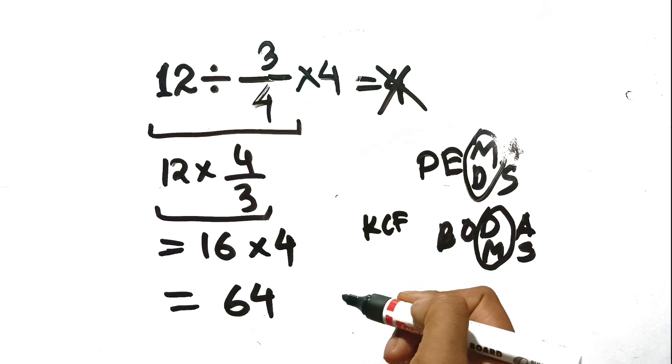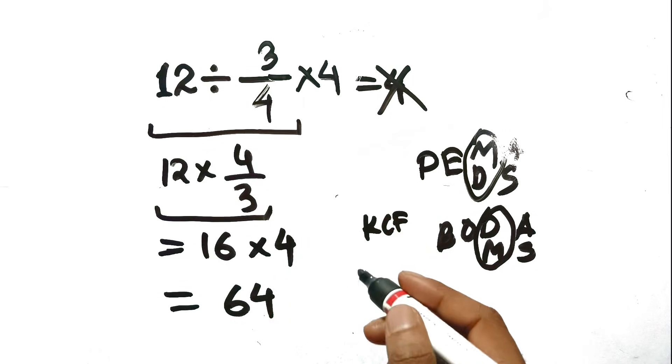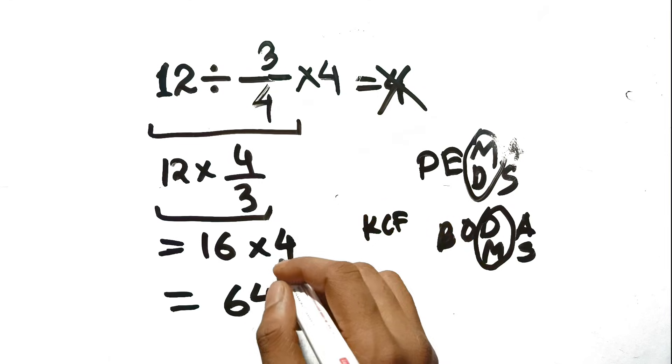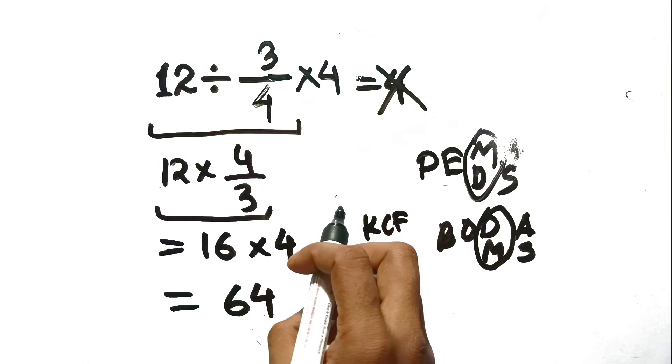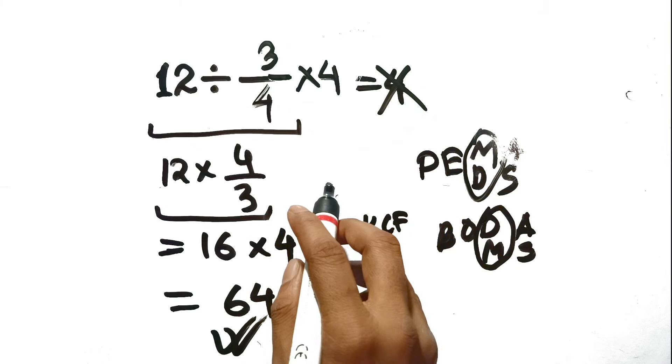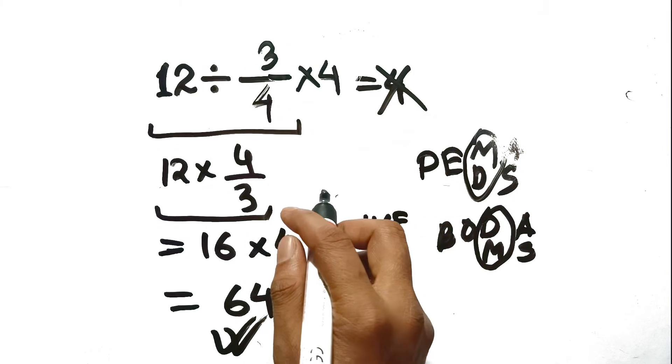That's a massive difference from 4. The trap was thinking the fraction and the multiplier were a package deal, but the order of operations split them up right at the start. So the correct answer is 64, not 4. Think you've got a better explanation? Let's see it in the comments.